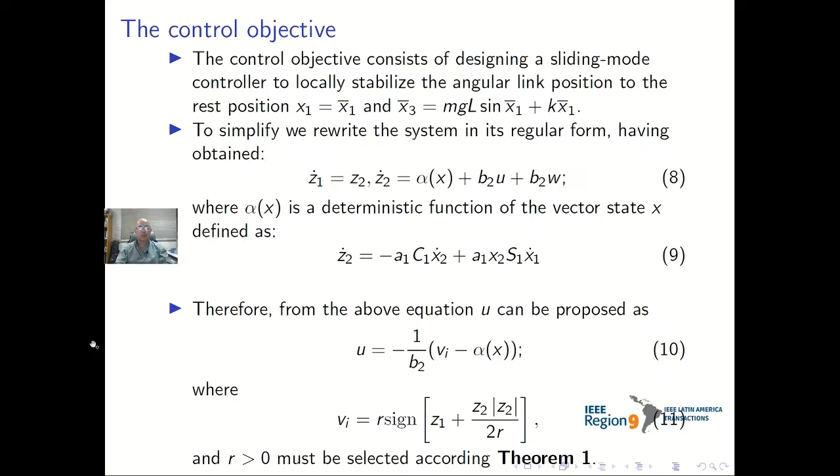Therefore, from the above equation, u can be proposed as in equation 10, where vi is expressed as in equation 11, and r has to be strictly positive and must be selected according to theorem 1.